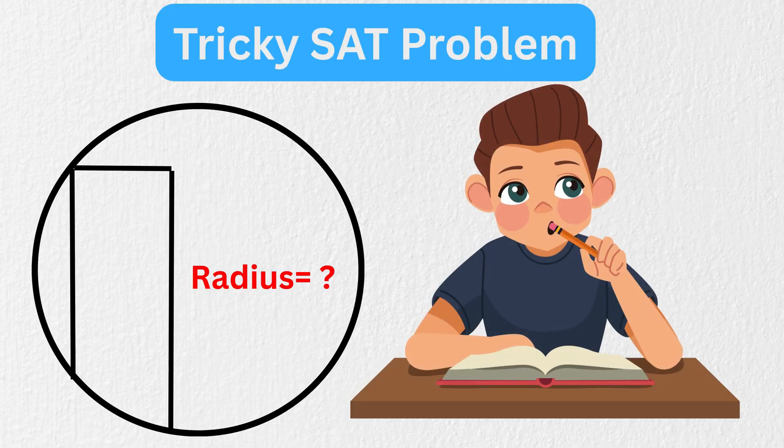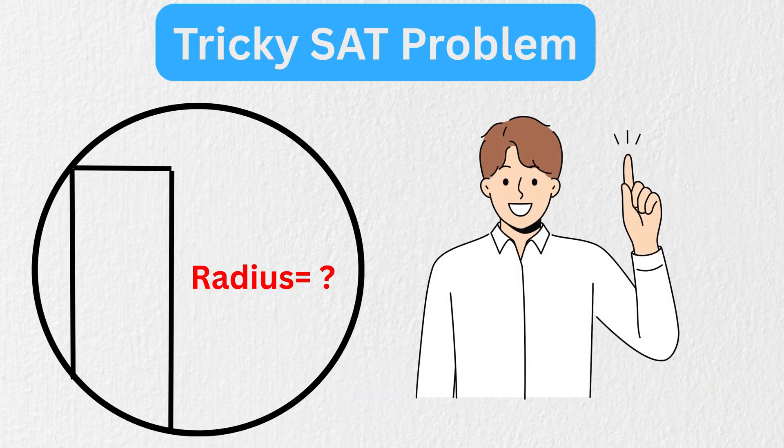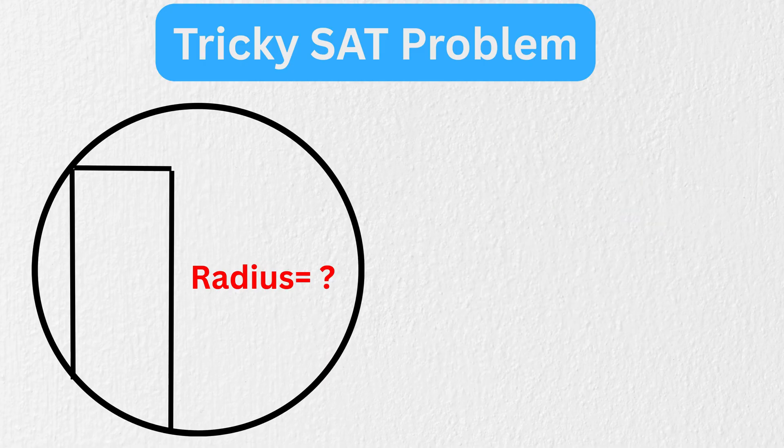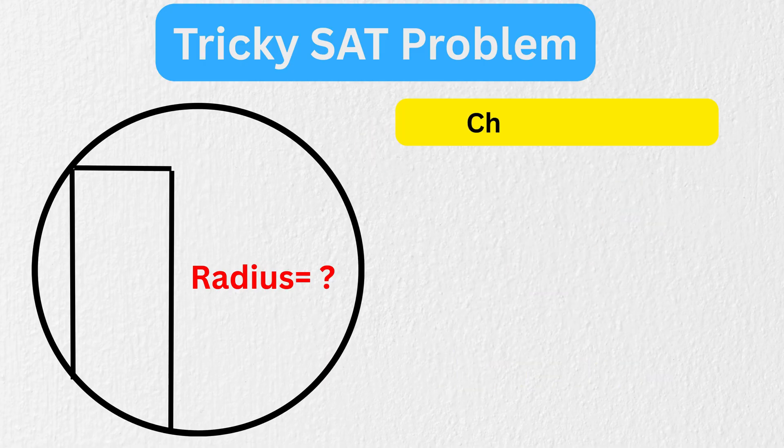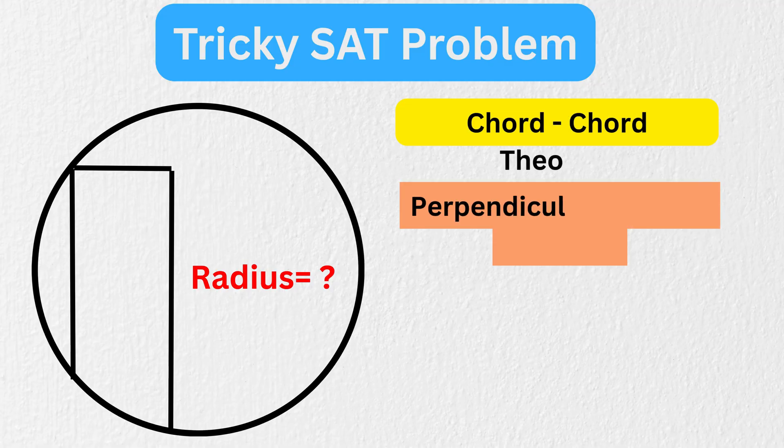Can you find the radius of this circle? It looks very tough, but let's make it easy. This is an amazing question, because in this single question we will be using four different theorems like chord-chord power theorem, perpendicular bisector of a chord, Thales' theorem, and Pythagoras theorem.